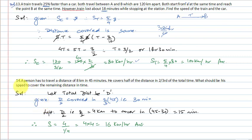Coming to question number 14: A person has to travel a distance of 8 kilometers in 45 minutes. He covers half the distance in two-thirds of the total time. What should be his speed to cover the remaining distance?